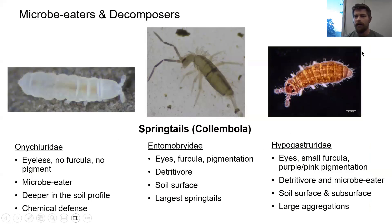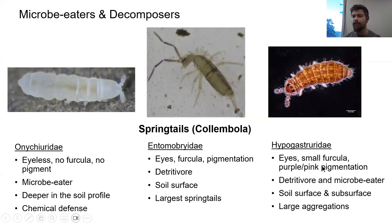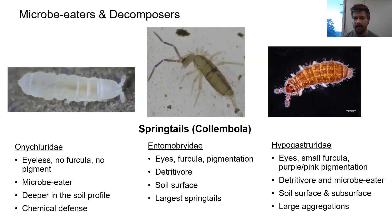The last group I want to talk about are the Hypogastrurids. These guys are kind of in between the Entomobryids and the Onychiurids in terms of where they're living in the soil profile. They have eyes and some pigmentation, but a pretty small furcula because they're not really using it to jump around much. These guys again are detritivores and microbeaters, breaking down litter on the soil surface, incorporating it back into the soil, and encouraging nutrient cycling. They can often be found in really large aggregations.